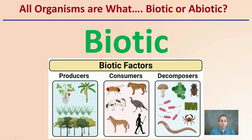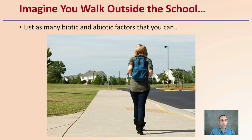All organisms are biotic. We can classify them further as producers, consumers, or decomposers, but all of these still fall into the category of biotic. Imagine you walk outside the school — list as many biotic and abiotic factors as you can. Pause the video and jot a couple down in each of those respective categories.